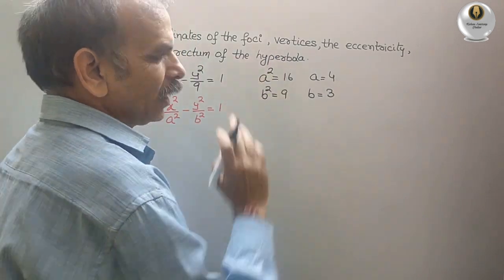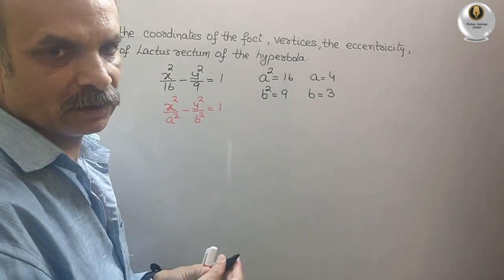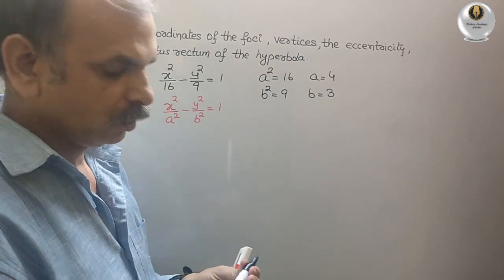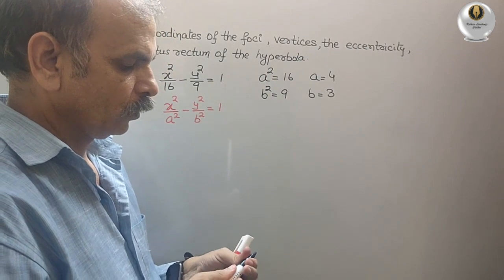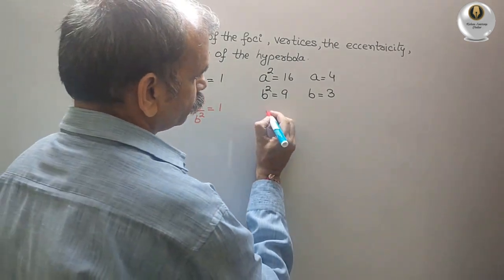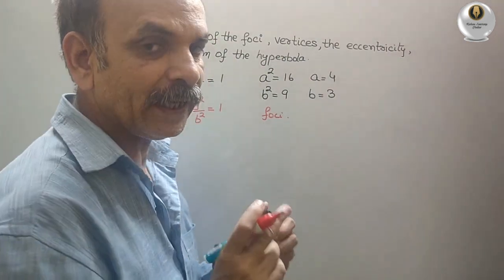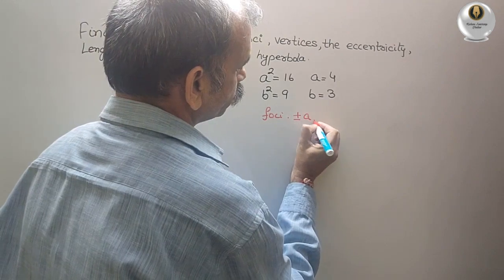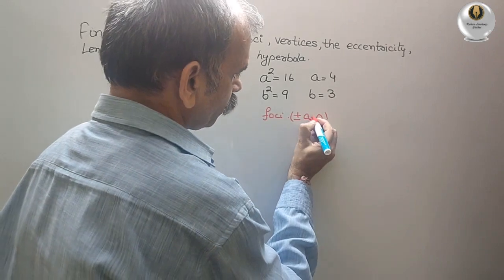Now they have given the hyperbola. That means, where is your vertex? Or where is your focus. So we should know the formula of that. The formula for the focus is what? Is plus minus A e comma 0.